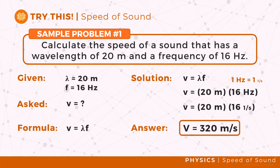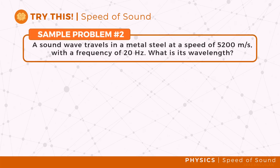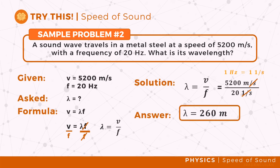Now it's your turn. A sound wave travels in metal steel at a speed of 5,200 meters per second with a frequency of 20 hertz. What is its wavelength? You may pause the video for more time.